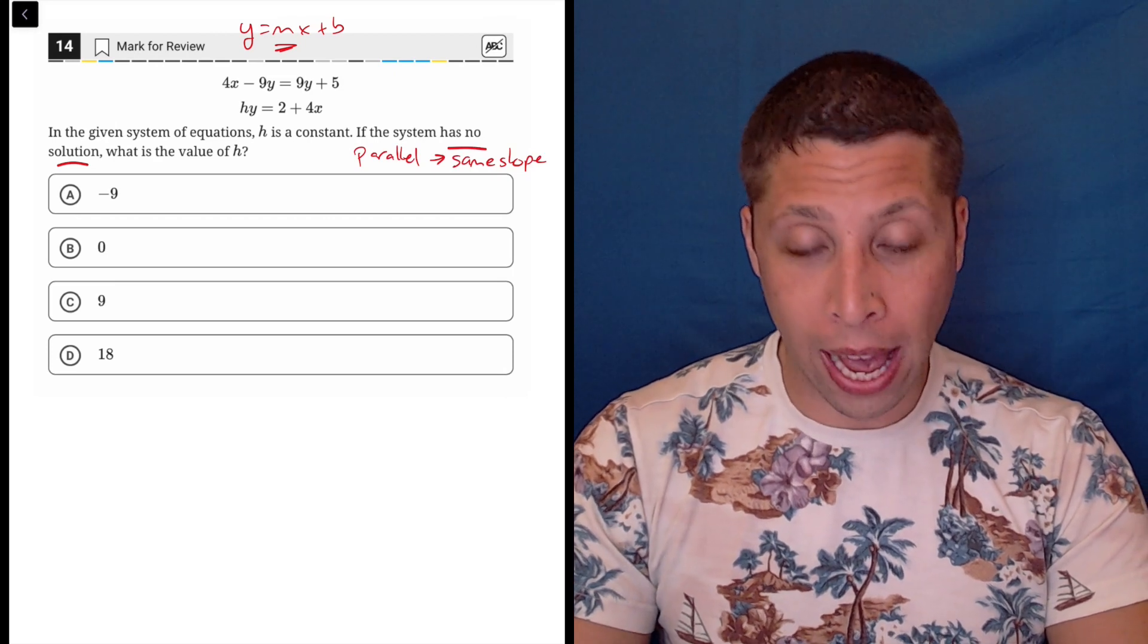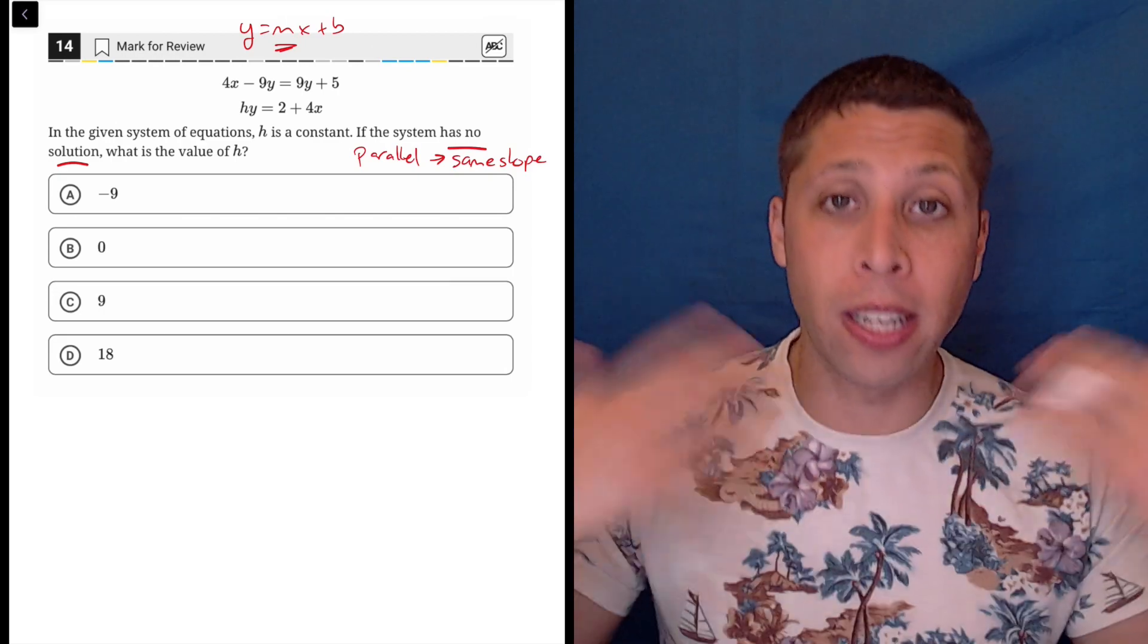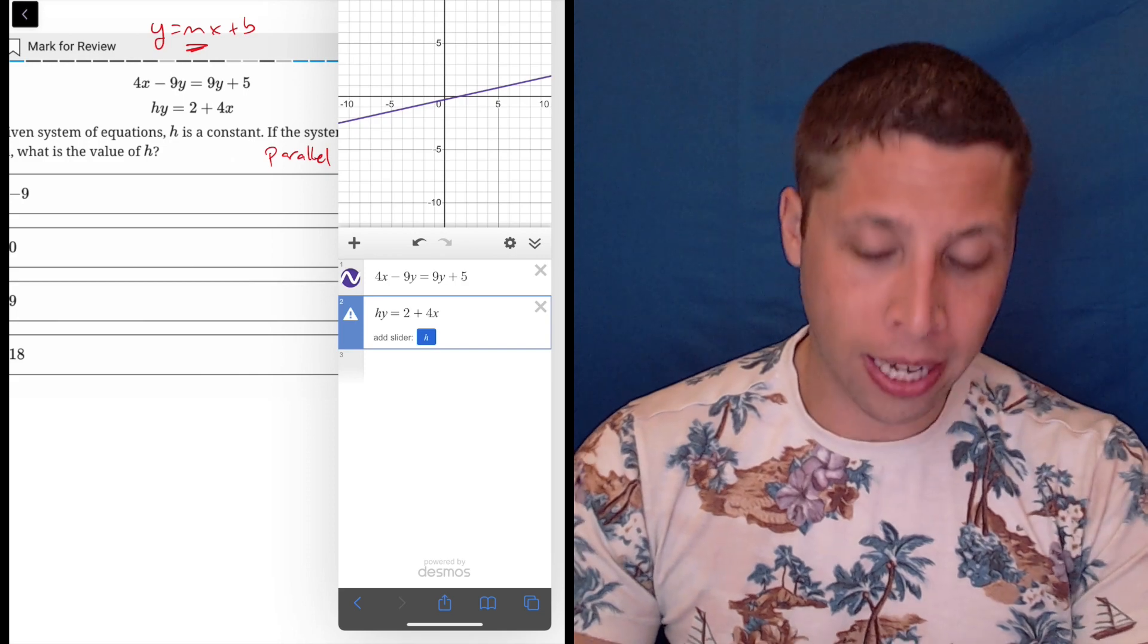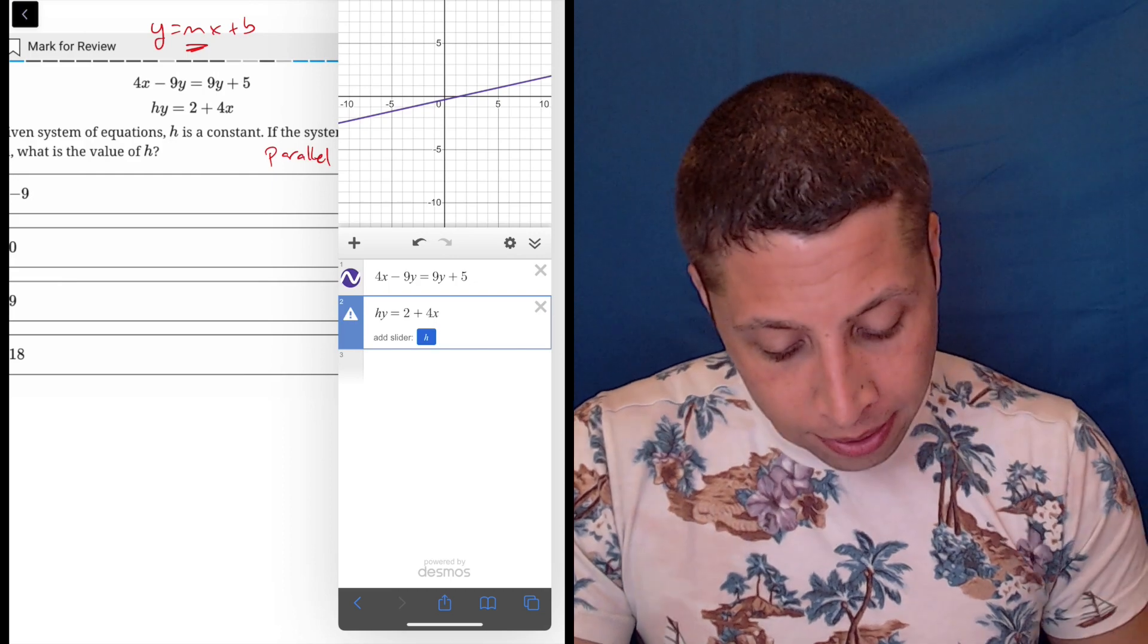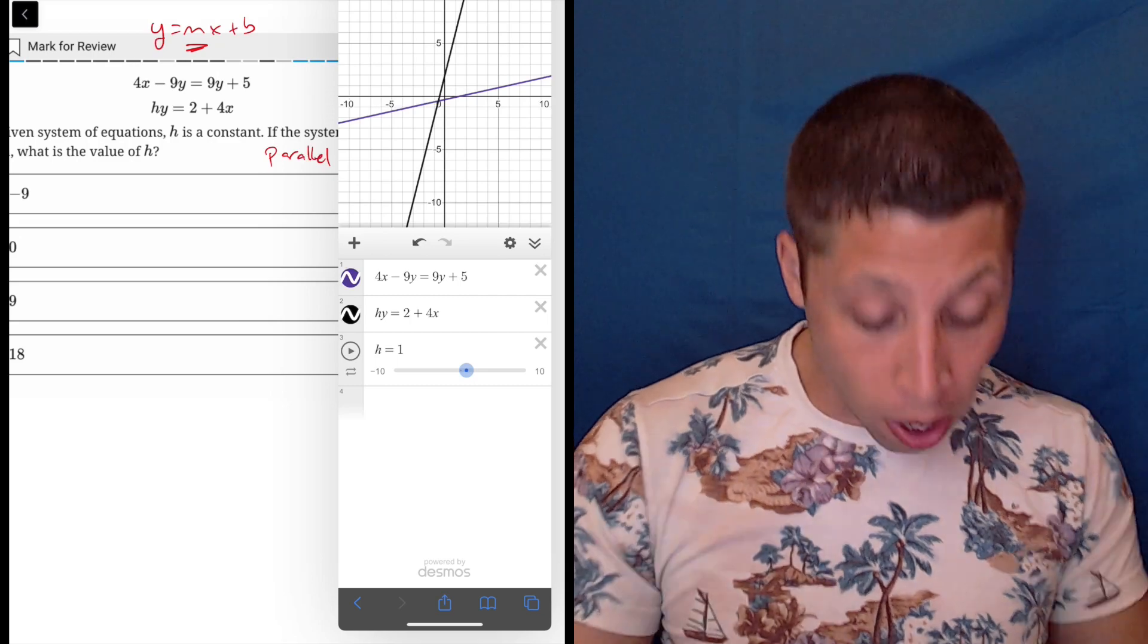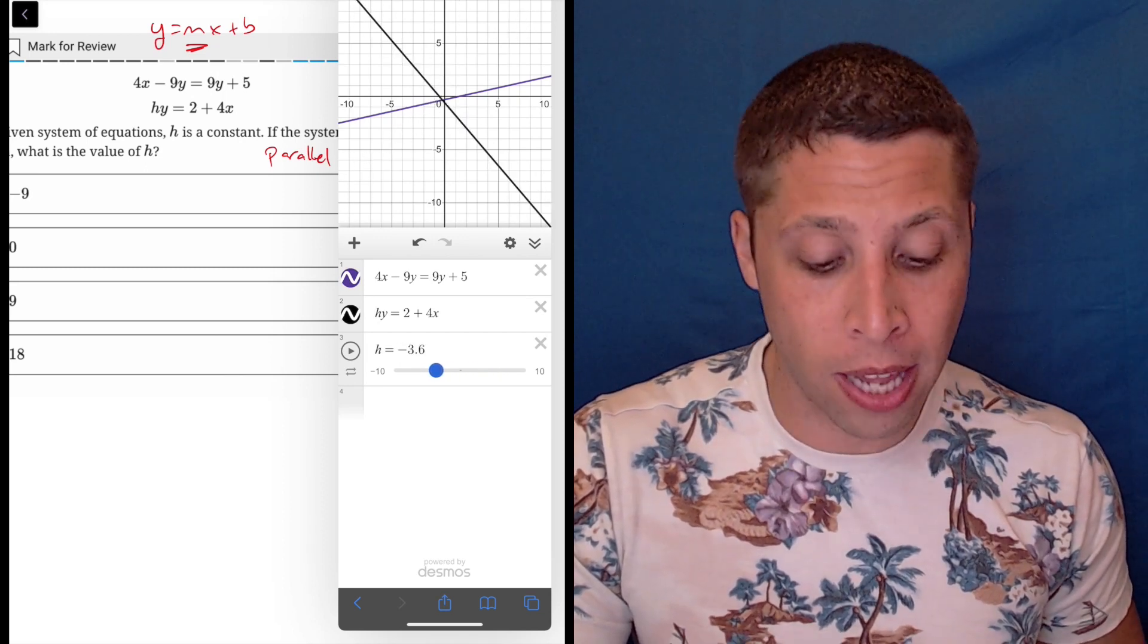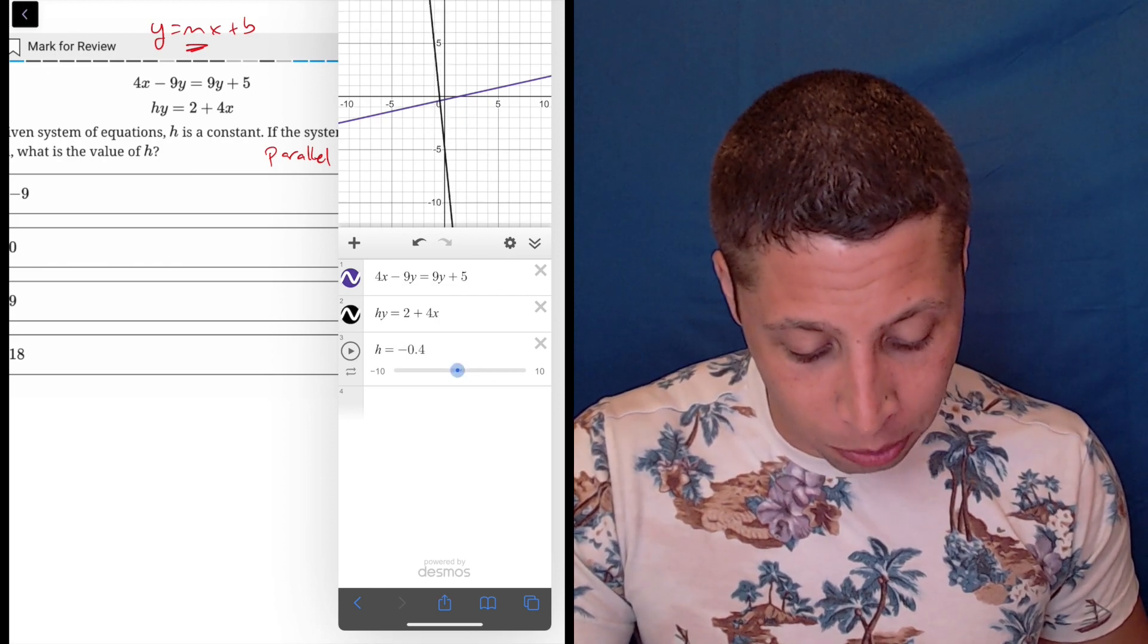So normally when we have systems of equations and we're asked to find the solution, we just graph it, let Desmos take care of it, it's going to show us where they cross, and that's that. We don't need to do any algebra. But here, if we do that, it gets a little messy. So the top equation graphs no problem, but the second equation gives me this little error, and that's because there's too many variables. The h is causing a problem. But if I hit this add a slider, what it's going to do is it's going to let me adjust the value for h.